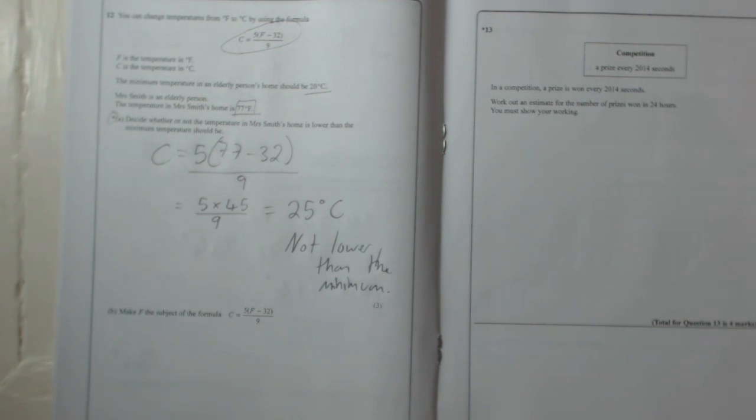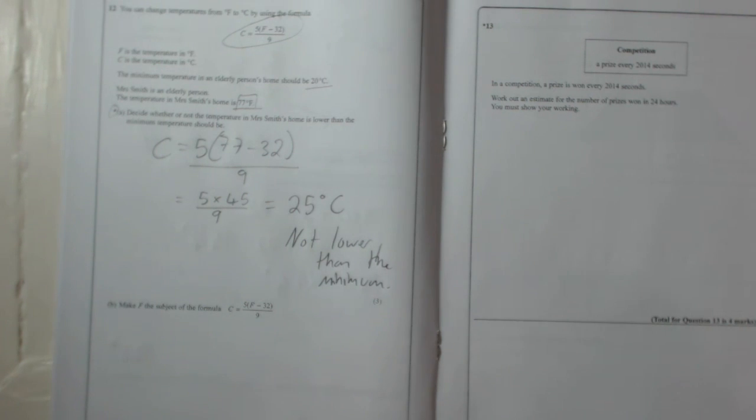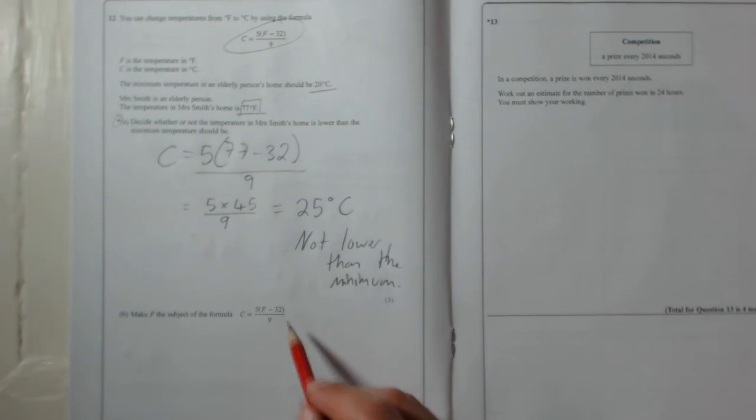B. Make F the subject of the formula. Now at the moment, C is the subject of the formula because that's the one that's on its own. So what we need to do is get F on its own. So this is just like solving equations.